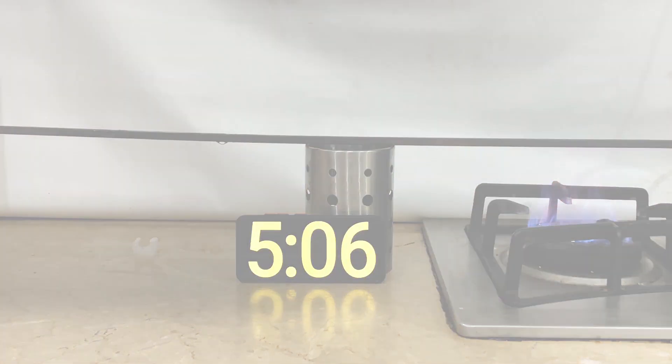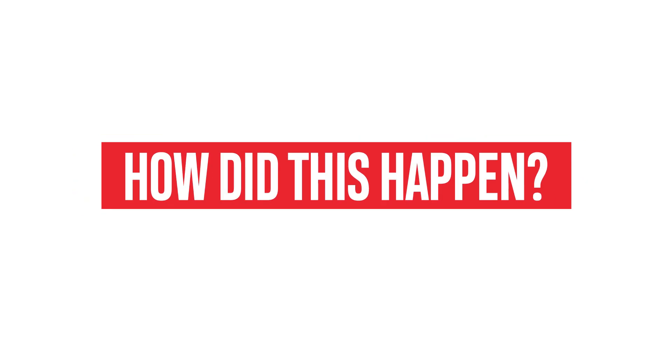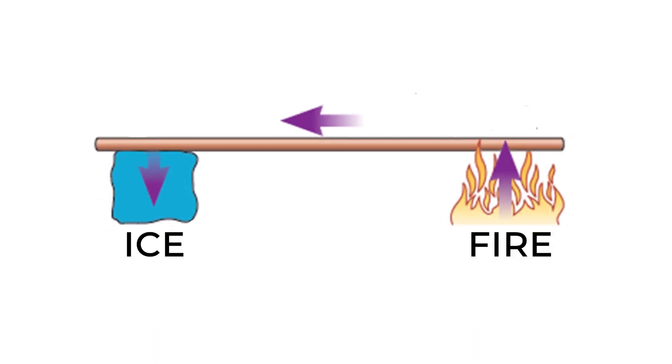So how did this happen? When we started to heat the other end of the metal rod, heat started to transfer from the hot end to the cold end. If we see around us, no real object can maintain a perfectly constant temperature as heat is transferred in or out.